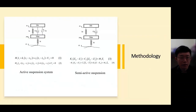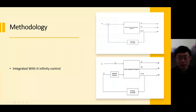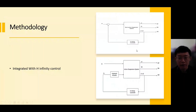For the methodology, the researchers use a 2-degree-of-freedom basic quarter car model to derive the equations that are put into the system block diagram. From the derived equations, they put it into the system block diagram, then add the H-infinity controller to the system and use MATLAB Simulink to run the simulation to determine the performance of the suspension system.